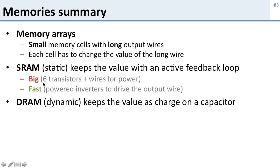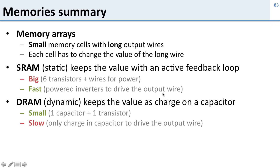So SRAM is big. It uses six transistors, plus you need wires for the power. So this isn't good, it means it's going to cost a lot. But it's really fast, because you have these powered inverters, you can drive the output wire much faster. DRAM is the opposite. It's really small. Just one capacitor and one transistor. So that means you can get lots of it very cheaply, but it's slow, because you only have the charge in the capacitor to drive that really long wire.